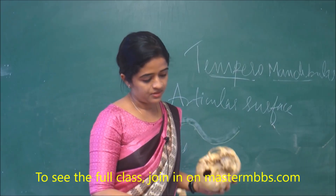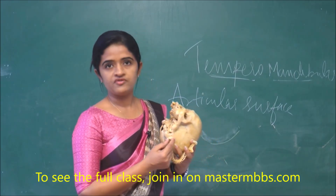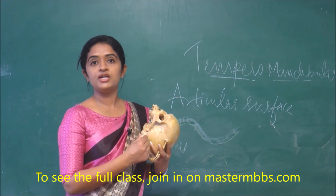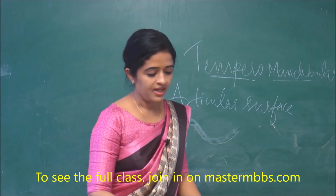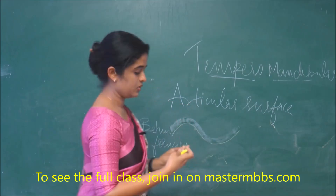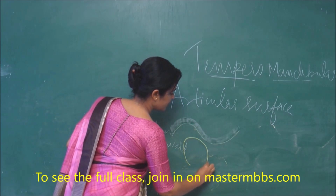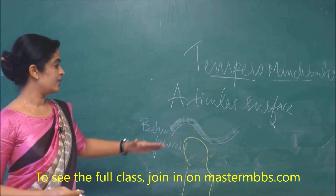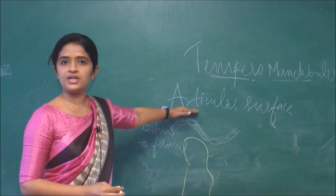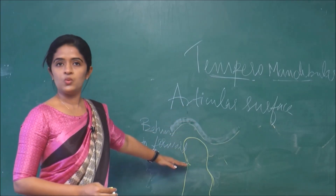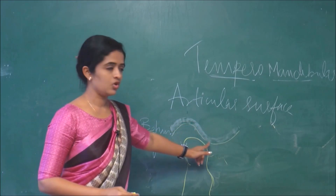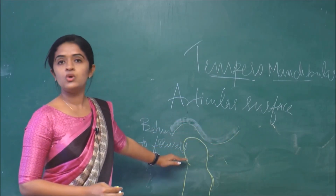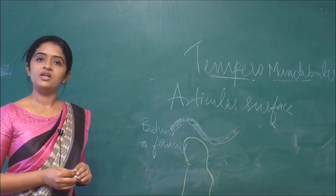The next thing is formed by the head of the mandible — that is the condyle. So the lower articular surface is formed by the head of the mandible. To summarize: the upper articular surface is concavo-convex from behind forwards, and the lower one is formed by the condyle of the mandible.